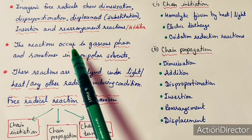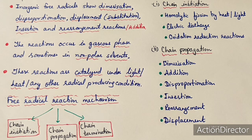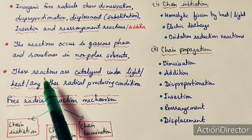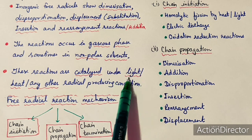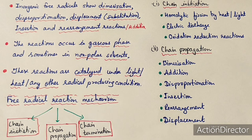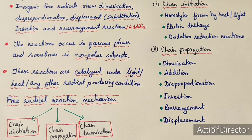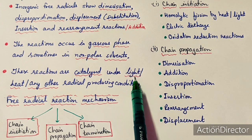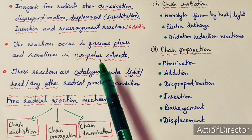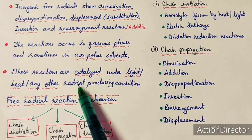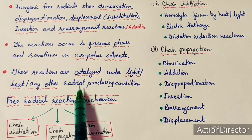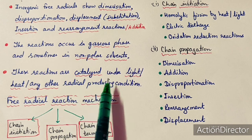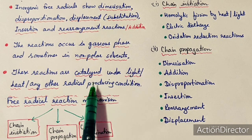The reactions generally occur in the gaseous phase and sometimes in nonpolar solvents. The reactions can be catalyzed under light, heat, or other radical-producing conditions. Free radicals can be generated thermally, photochemically, through electric discharge, or through oxidation-reduction reactions, as discussed in the previous lecture on methods of production.